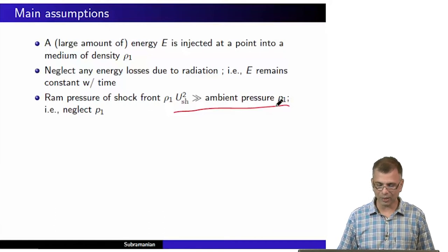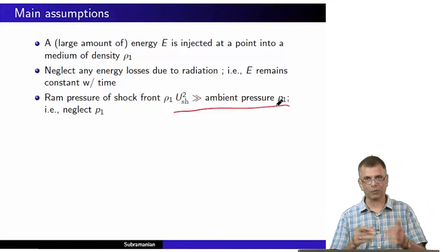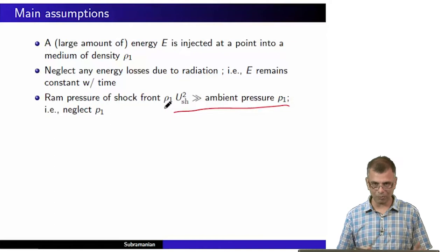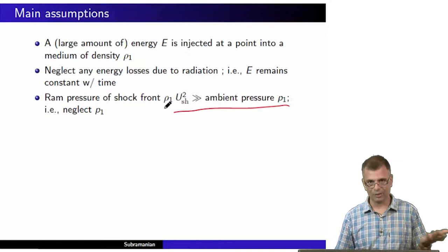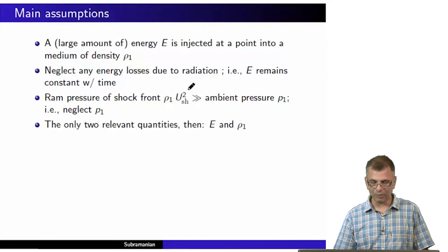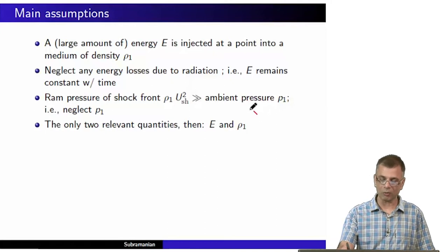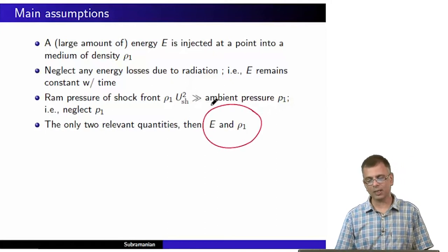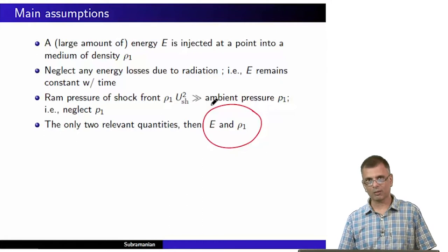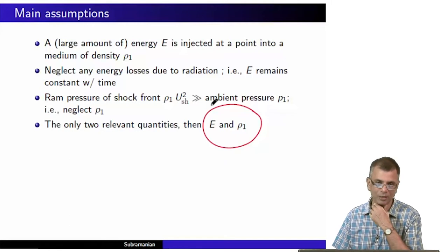The density of the medium is ρ₁ and the pressure is P₁, but P₁ really doesn't matter. Therefore there are only two relevant quantities: E and ρ₁. P₁ doesn't matter, and E does not decrease with time. This is one of the main building blocks on which this brilliantly simple theory is constructed.